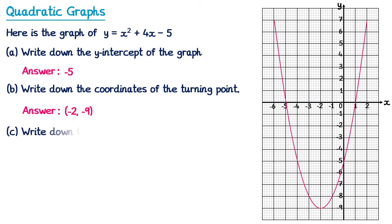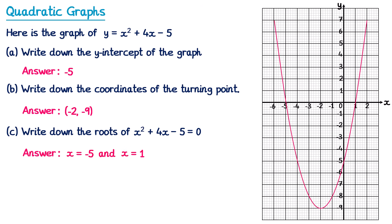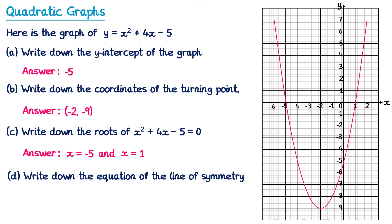Then for part c we write down the roots of this equation. To find the roots we look for where the graph crosses the x-axis, which is in two places. So there are two roots: x equals negative 5 and x equals 1. Finally, for the equation of the line of symmetry — I draw on the line of symmetry and see it crosses the x-axis at negative 2, so the equation is x equals negative 2.